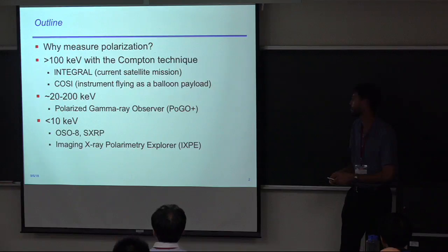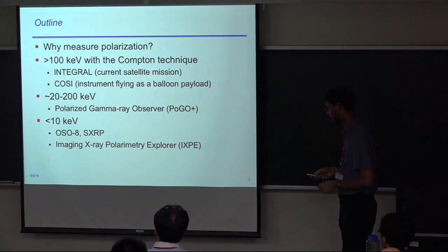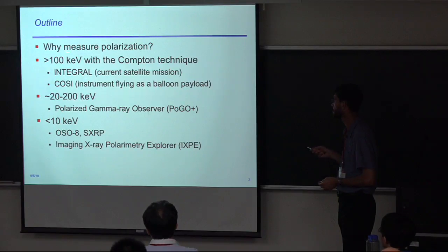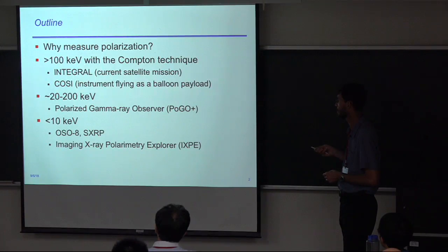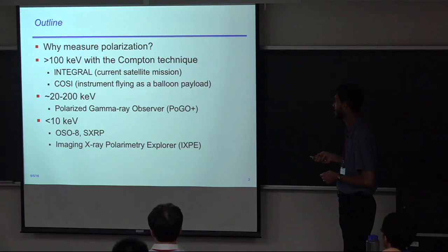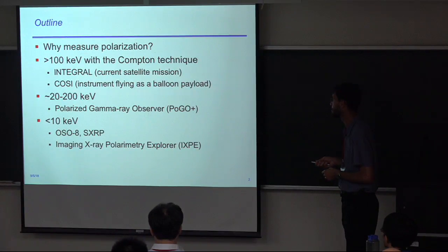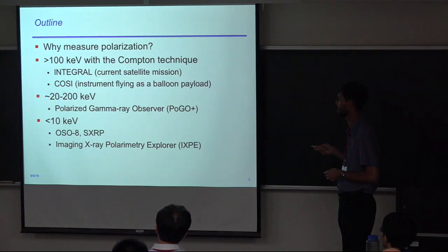This is the part of the talk about polarization. Let's start by talking about why we want to measure polarization. One thing is constraining emission mechanisms — this was dramatically seen for the Crab Nebula, where polarization was measured in soft X-rays and really indicated it was a synchrotron source of emission. You can distinguish between different types of emission using polarization measurements.